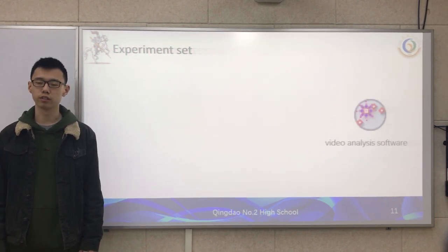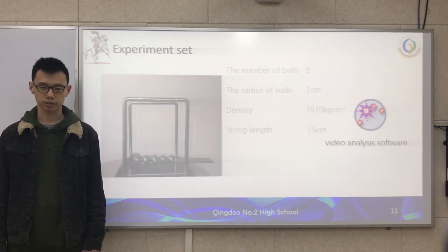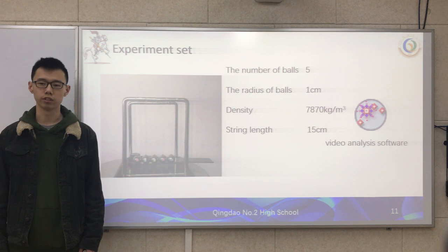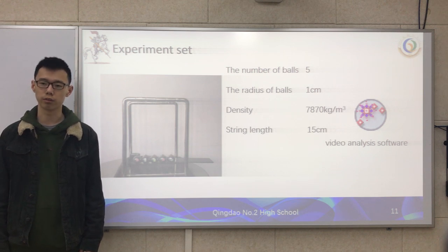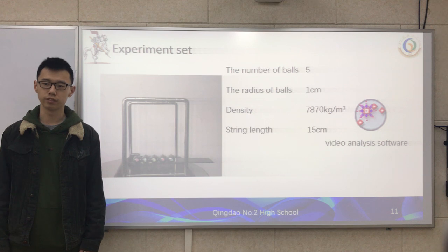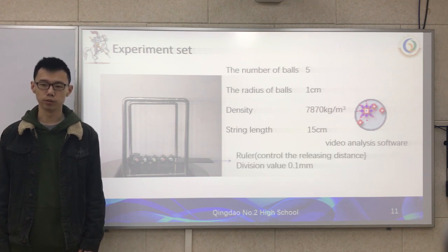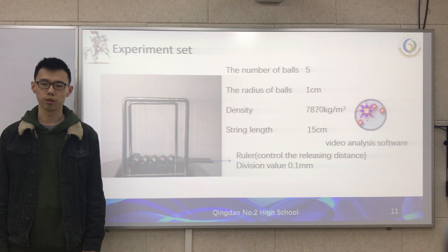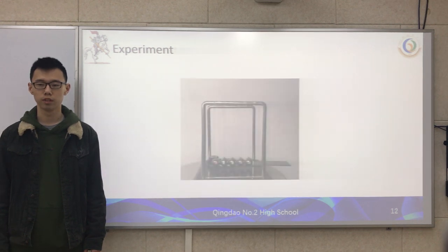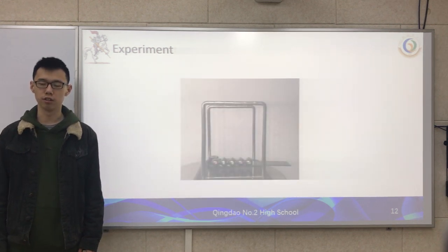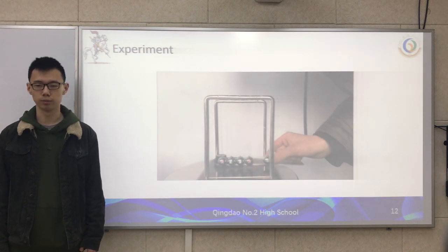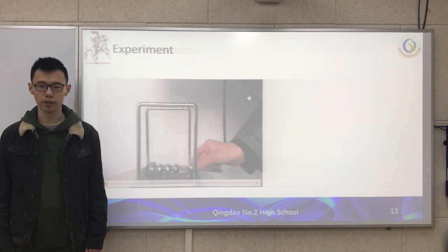We use a tracker to track the motion of the balls. The number of balls in our Newton's Cradle is 5, the radius of the balls is 1 cm, the density of the balls is 7,870 kg per cubic meter, and the string is 15 cm. The ruler helps us control the release distance, with a division value of 0.1 mm. The markers help the tracker to track the motion of the balls. The release distance means the distance between the initial position of the first ball and its rest position.